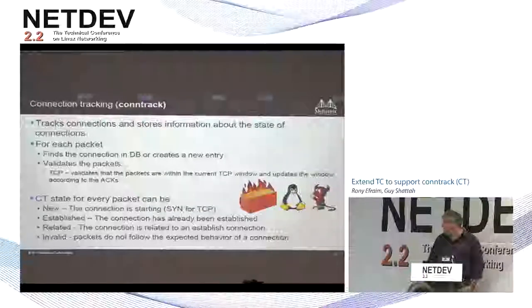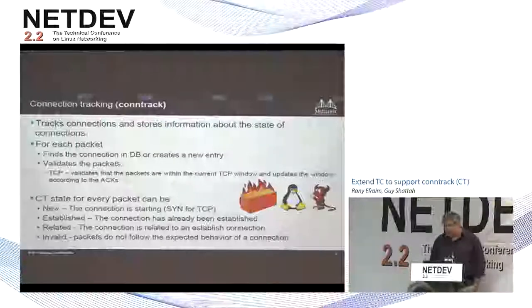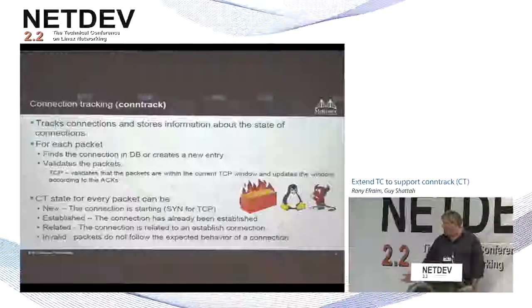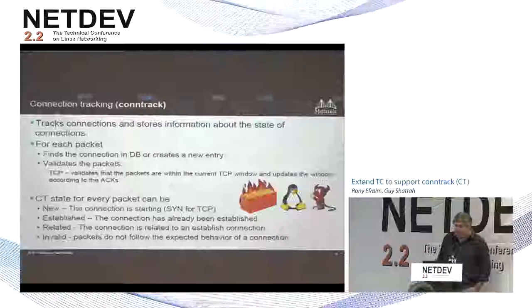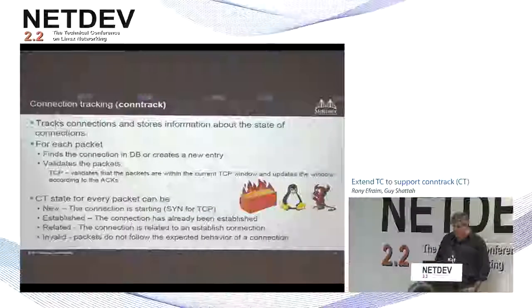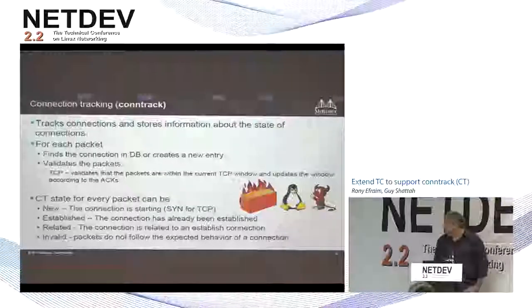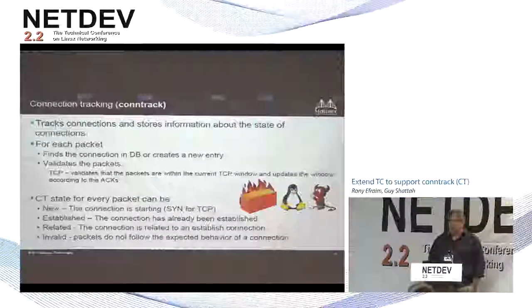The packet comes out from connection tracking with a state. The state can be 'new' for new connections, 'established' for a valid connection, 'related' because it's related to another connection like an FTP connection, and 'invalid' — meaning the packet is not part of a connection, probably because it couldn't validate the packet inside the TCP window. At the end, the invalid packet will probably be dropped.